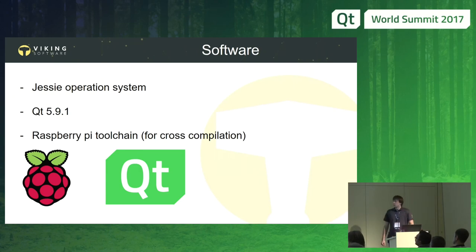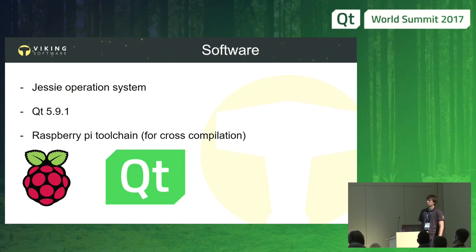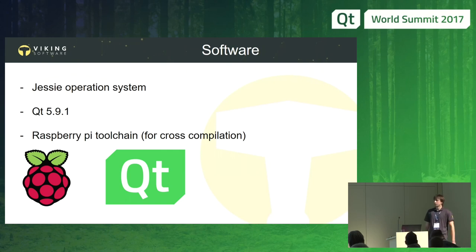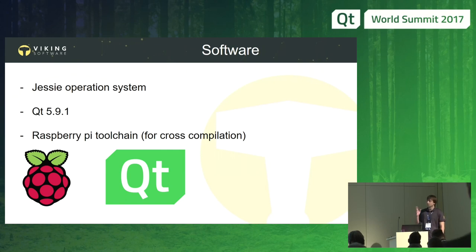Now let's move to software. I installed the Jessie operating system — it was the latest at that moment, though now they have Stretch. To initialize the CAN bus shield, we need to configure the boot.txt file and set up a default speed. I set that to 100 kilobits per second, as our cluster works at that speed. Jessie comes with an outdated Qt version — 5.3.2 — which doesn't have CAN bus support. Stretch comes with 5.6, but the serial bus module was introduced only in version 5.8. So if you want to use it, you need at least that version. I used 5.9.1 because it was also the latest at that moment.